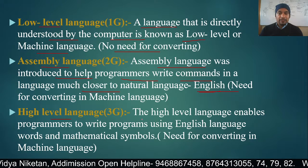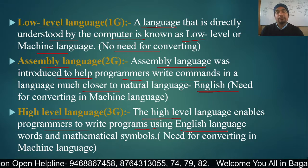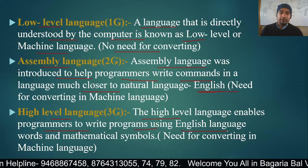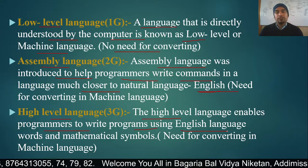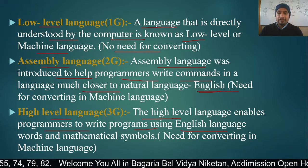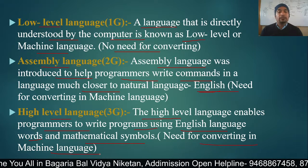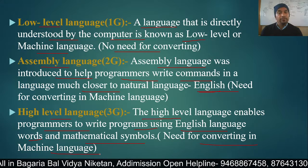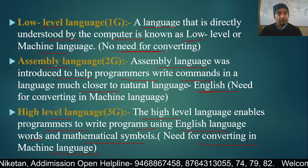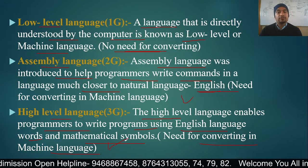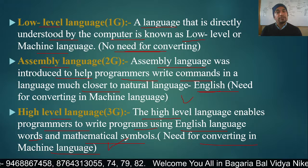High-level language enables programmers to write programs using English language, words, and mathematical symbols. So using English words and mathematical symbols, the program is written, but it needs to be converted into machine language. Low-level language does not require conversion, but assembly language and high-level languages must be converted into low-level so the computer can understand them.